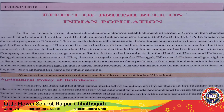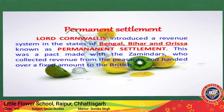The first system is the Permanent Settlement. Lord Cornwallis introduced a revenue system in the states of Bengal, Bihar and Odisha. It was a pact made with the zamindars who collected revenue from the peasants and handed over a fixed amount to the British.